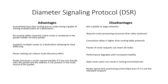Disadvantages include that it is not scalable to large networks and requires more processing resources than other protocols. Connection delay is higher than routing table protocols. Floods of route requests can reach all nodes, and performance degrades with increased mobility. A stale route cache can result in route inconsistencies, and nodes spend time processing control data even if they are not the intended recipient.